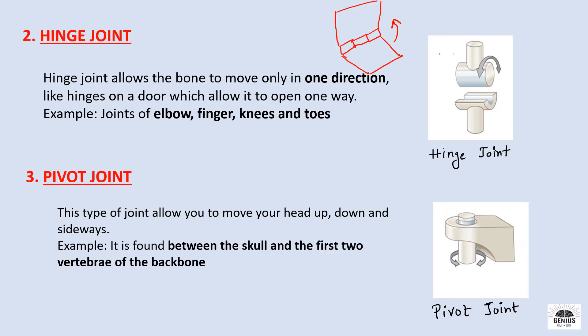The second type of joint is the hinge joint. Like door hinges allow a door to open in only one way, hinge joints allow the bones to move only in one direction. This type of joint is found in the elbow, fingers, knees, and toes.